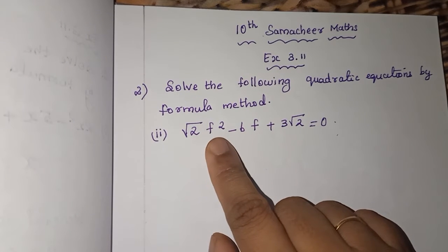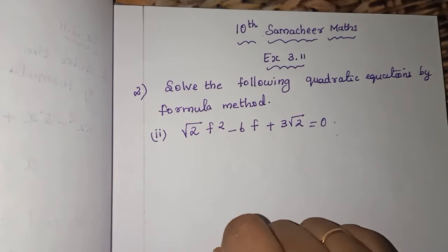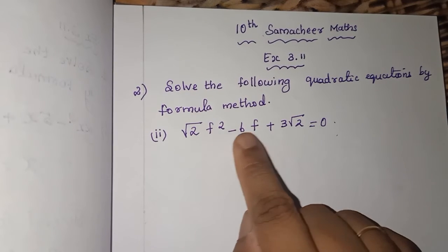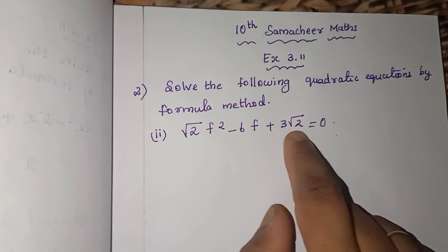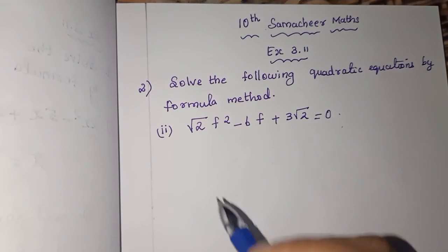In the first sum we saw the variable as x, right? Here, what is the variable? f is the variable because you can see f², f, and the constant. Instead of f, if x is there, no need to worry. It's the same method only.